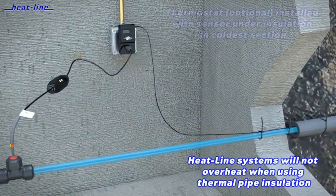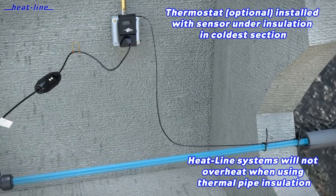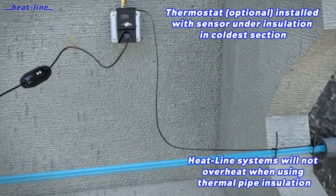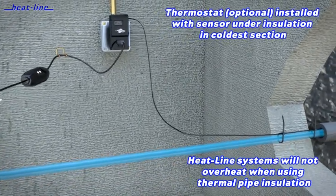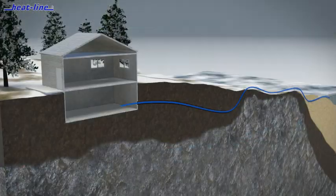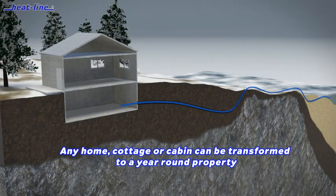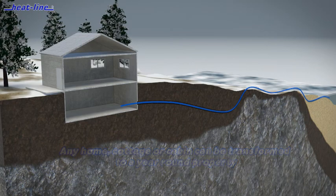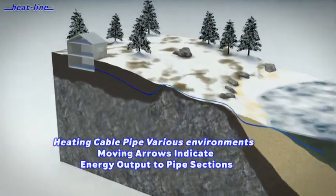Various thermostats are available. All thermostats can increase energy efficiency and provide on-off operation. It is important to understand how the Heat-Line system works. The heating cable has the ability to vary its power output in response to temperatures.